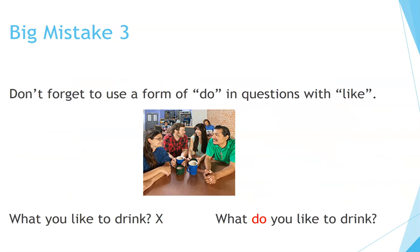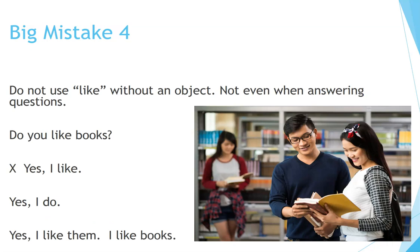Big mistake three: Don't forget to use a form of do in questions with like. Incorrect: What you like to drink. Correct: What do you like to drink? Big mistake four: Do not use like without an object — not even when answering questions. Incorrect: Do you like books? Yes, I like. Correct: Yes, I do. Yes, I like them. I like books.